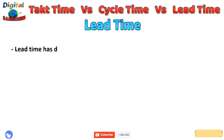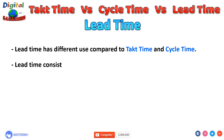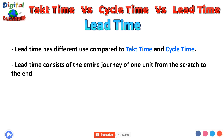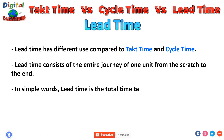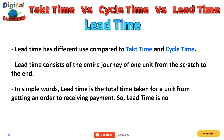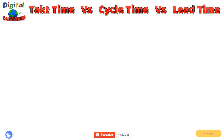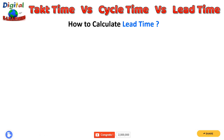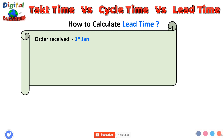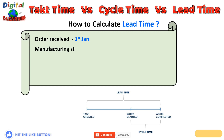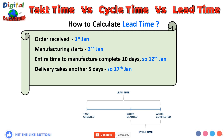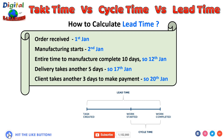Lead time has a totally different use compared to takt time and cycle time. Lead time consists of the entire journey of one unit from scratch to end. In simple words, lead time is the total time taken from getting an order to receiving payment — it is about the entire process of your organization, not just production. For example, if the client gives an order on January 1st, you receive and start manufacturing on January 2nd, manufacturing takes 10 days (January 12th), delivery takes another 5 days (January 17th), and the client takes 3 more days to make payment (January 20th) — so your lead time is 20 days.